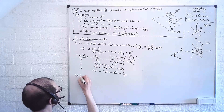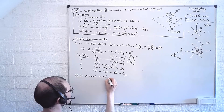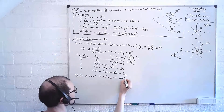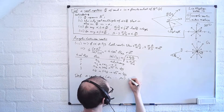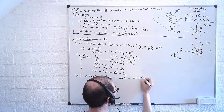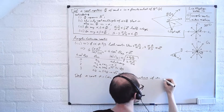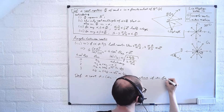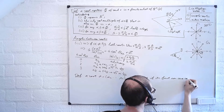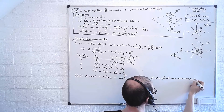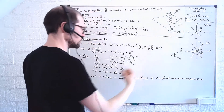Definition: a root alpha — a vector with number of components equal to the rank of the algebra — is positive if its first non-vanishing component is positive. Otherwise, we call it a negative root.